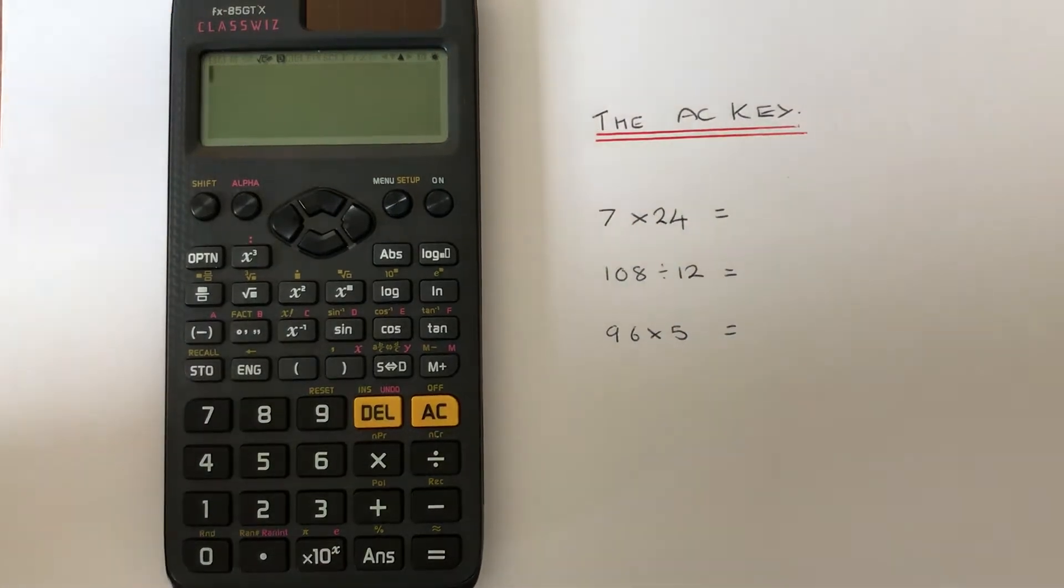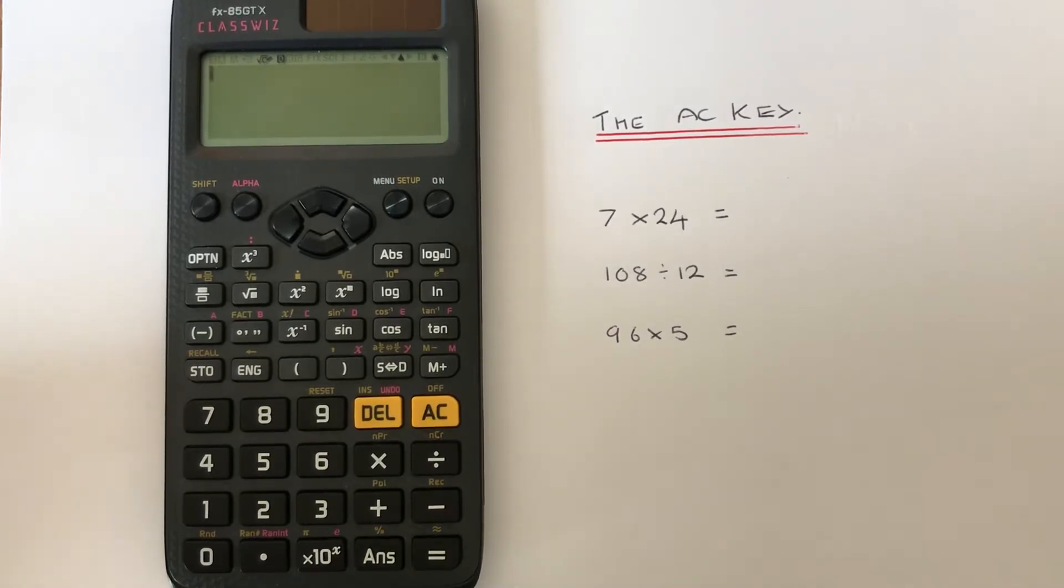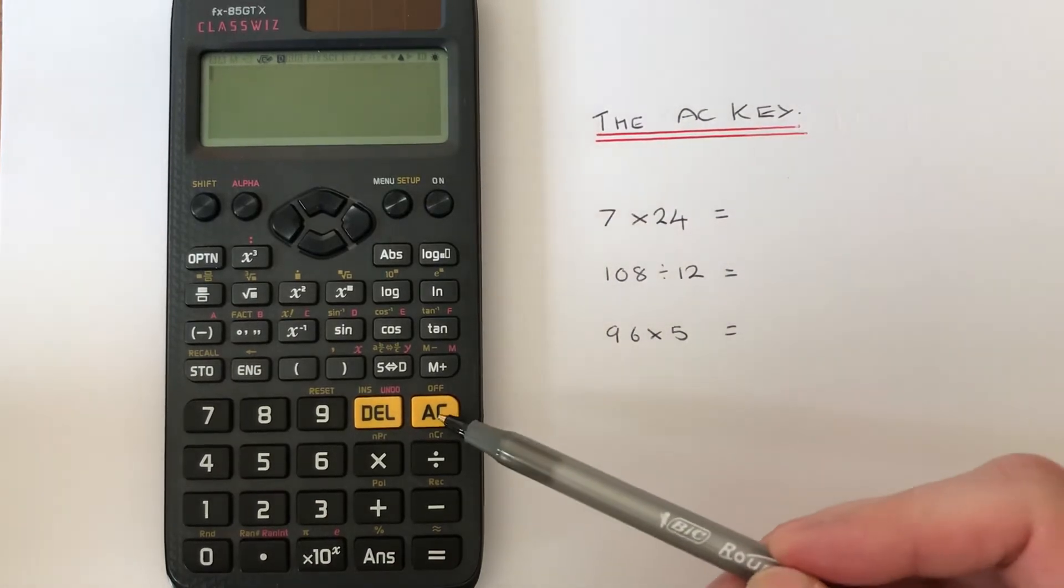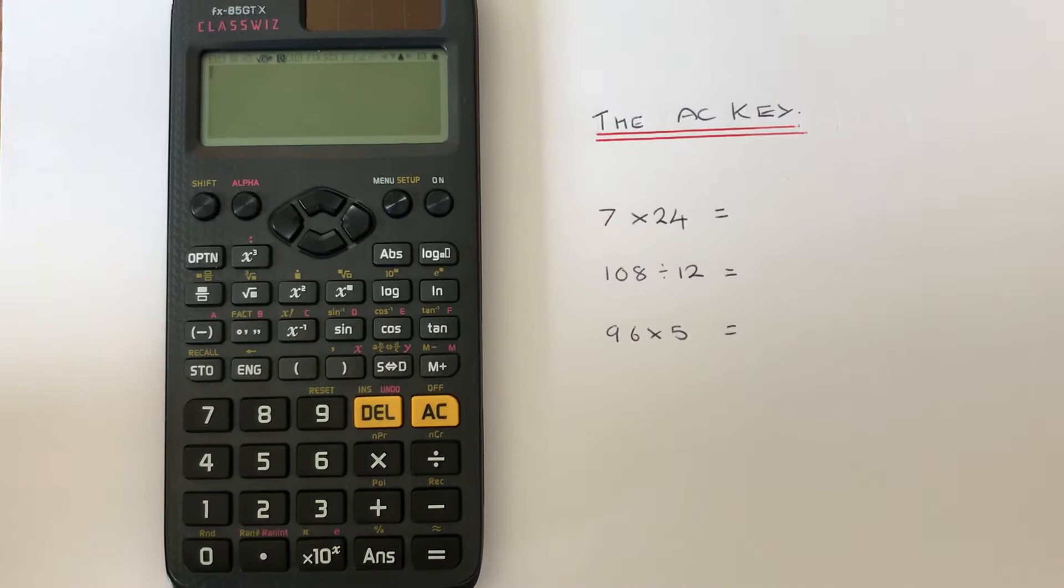Hi guys, welcome back. This is Maths 3000. Today I'm going to show you how to use the AC key on a Casio Classwiz scientific calculator. The AC key is located here and you can use it to delete calculations.